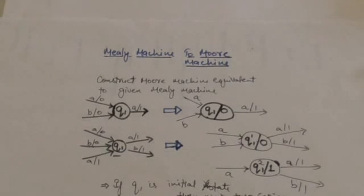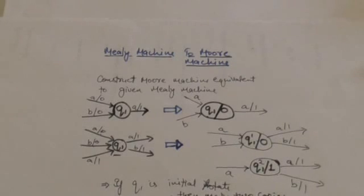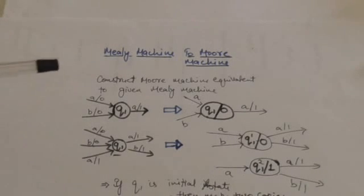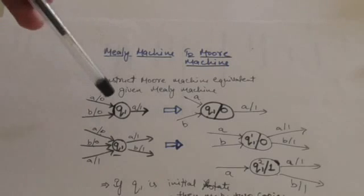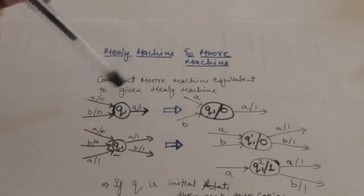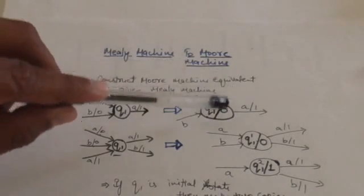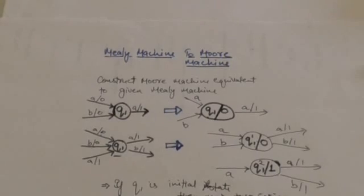Look at the incoming edges of state Q1 — they are labeled by output symbol 0. What I will do is remove these output symbols from the incoming edges and label the state with the output symbol instead. Both incoming edges are labeled by output symbol 0, so I have removed the output symbol from the incoming edges, associated it with the state, and left the outgoing edges as they are.